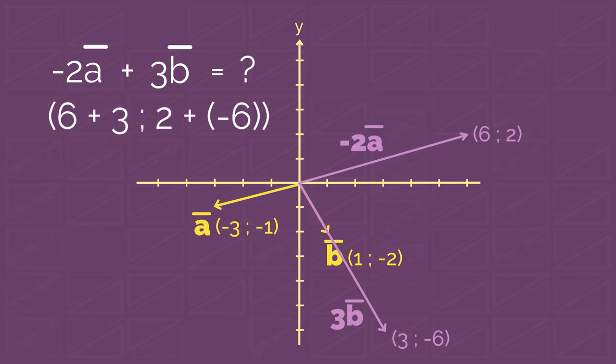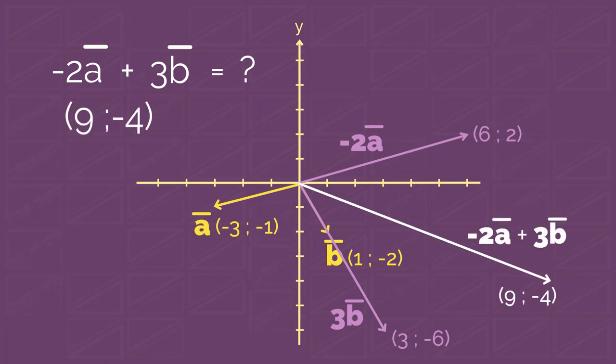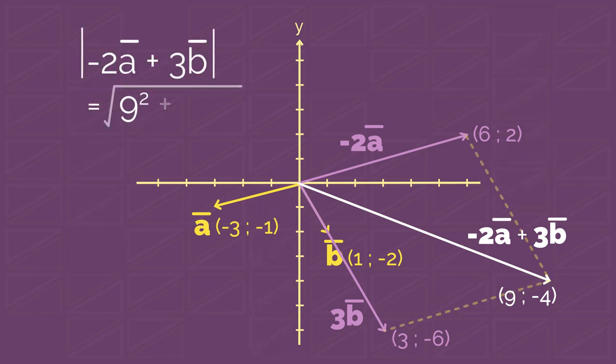Vector (-2A + 3B) has coordinates (9,-4). And its length is the square root of 97. Did you get it right?